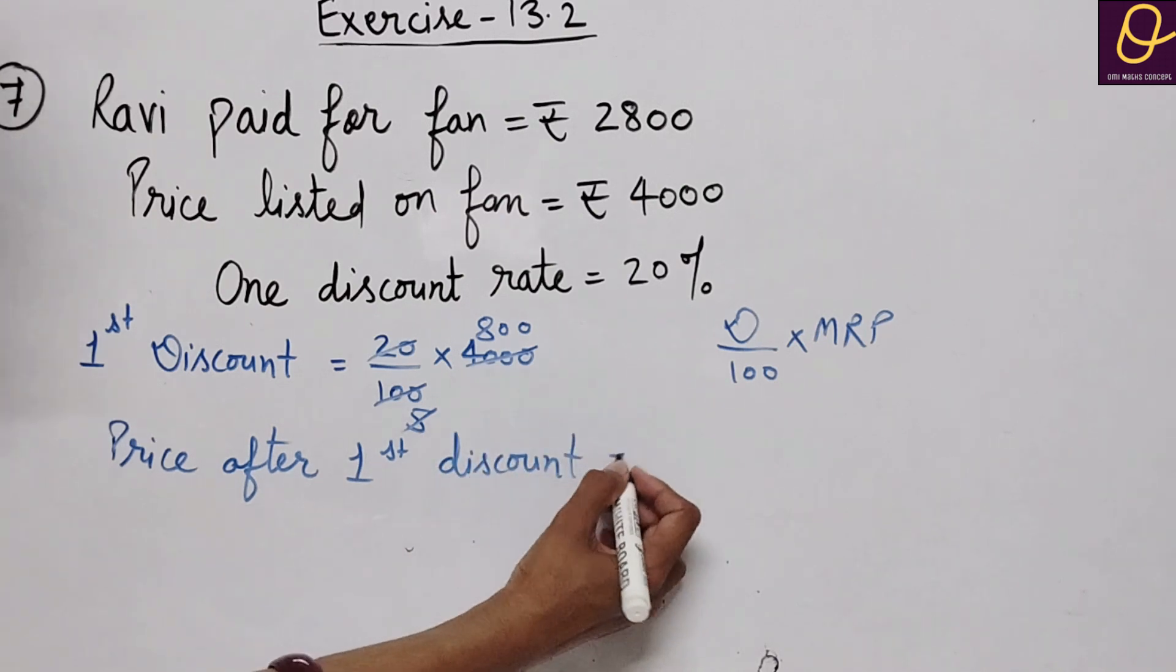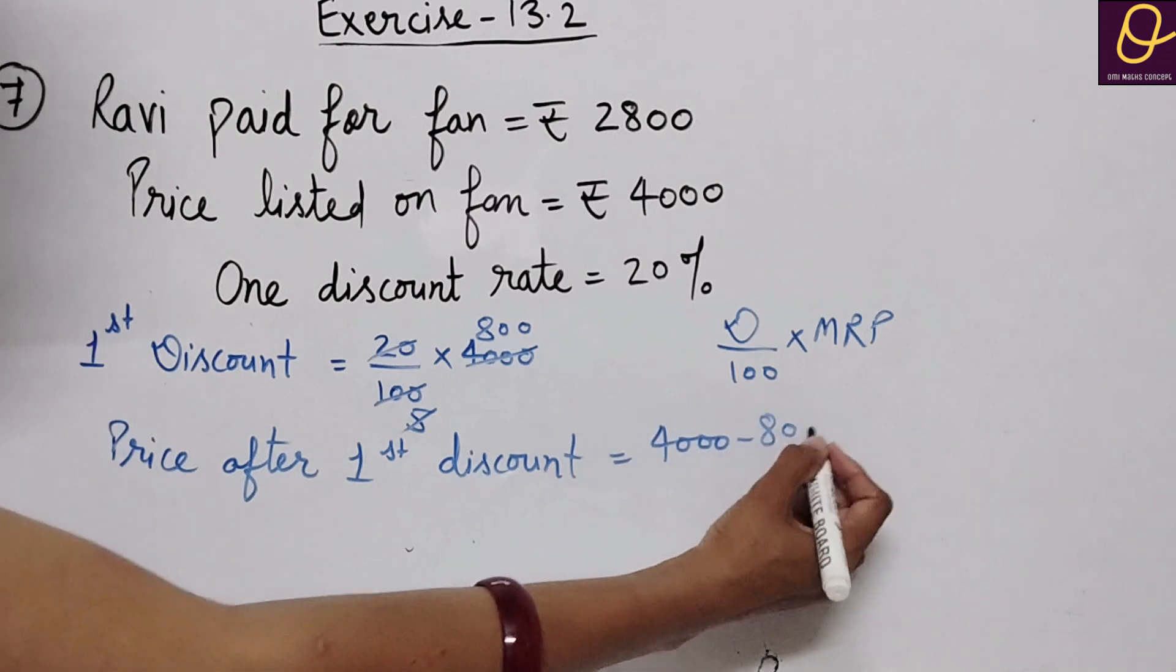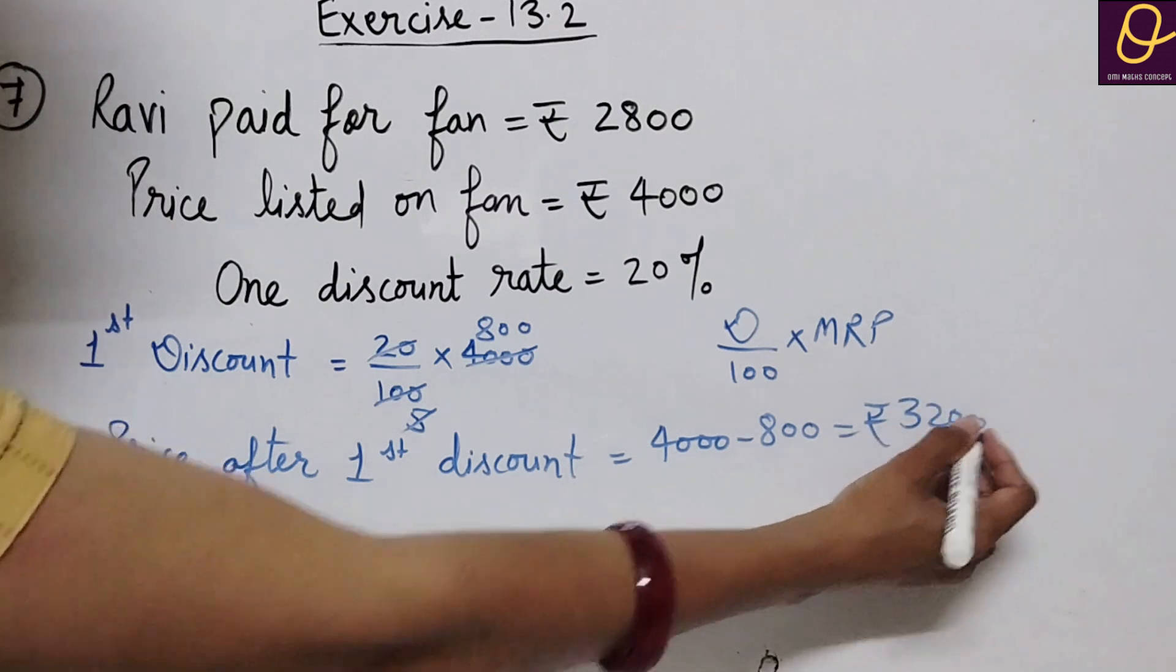Price after first discount will be equal to four thousand minus eight hundred, that is equal to rupees three thousand two hundred.